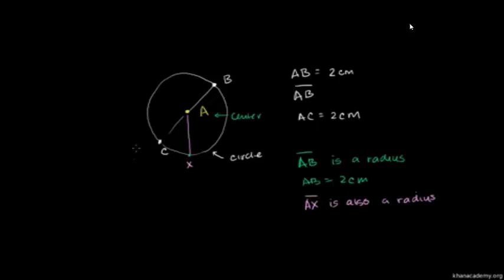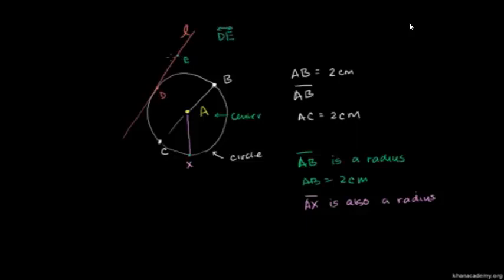Now you can also have other forms of lines and line segments that interact in interesting ways with the circle. You could have a line that just intersects the circle at exactly one point. Let's call that point D. And the only point on the circle that is also on that line is point D. We could call that line L. This line that only has one point in common with our circle — we call this a tangent line. So line L is tangent to the circle.